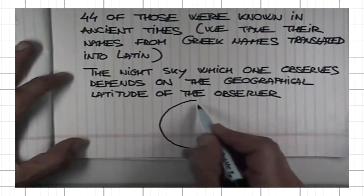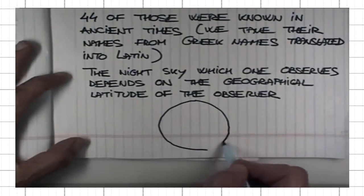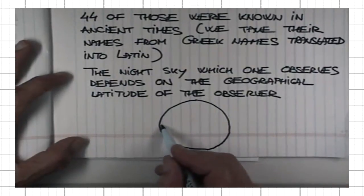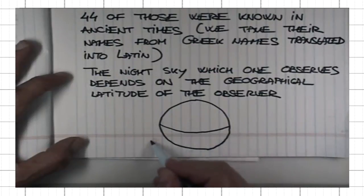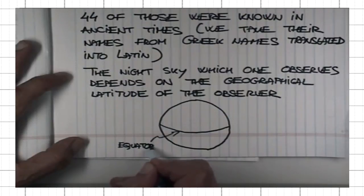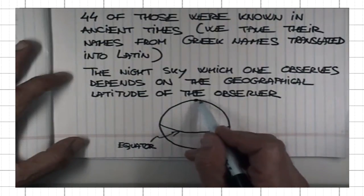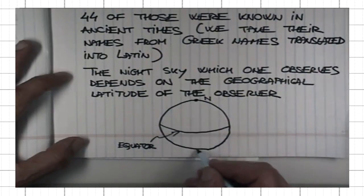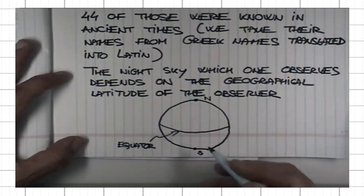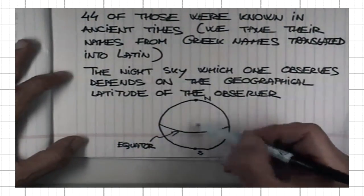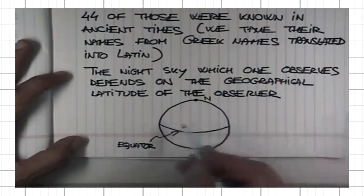Here, I'm going to draw the Earth. Here is the equator. Here is the north-south. The Earth's rotational axis passes through north-south. This is the equatorial plane.